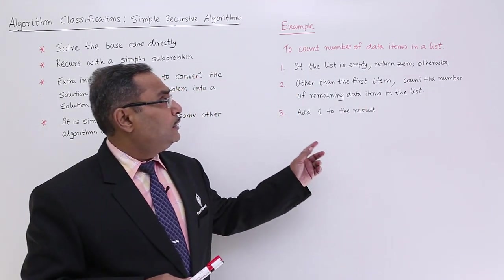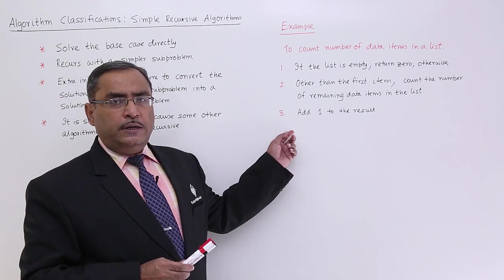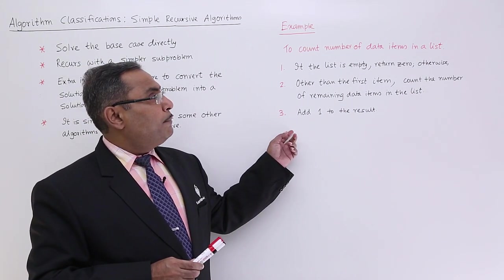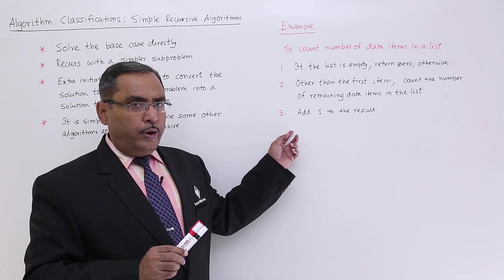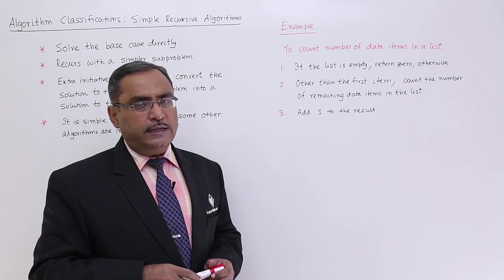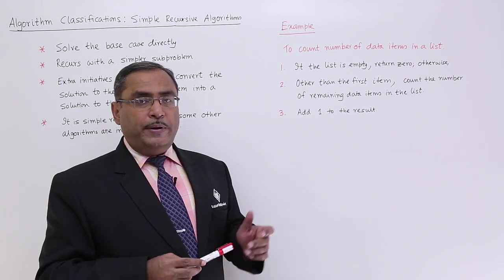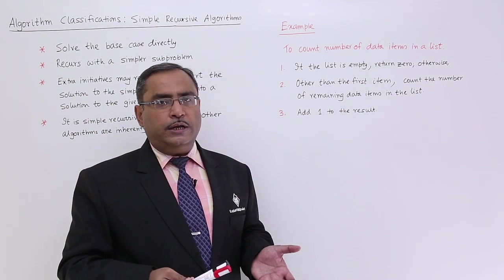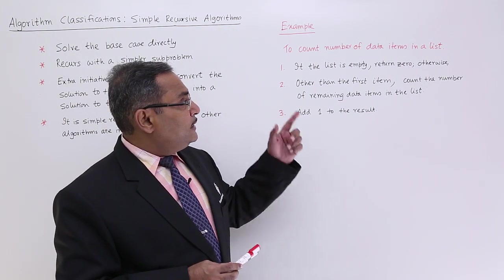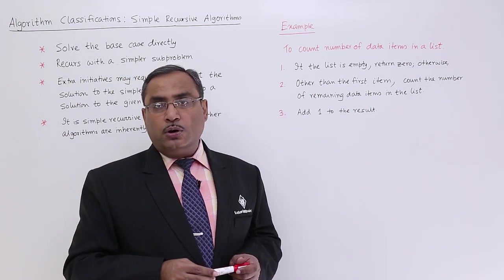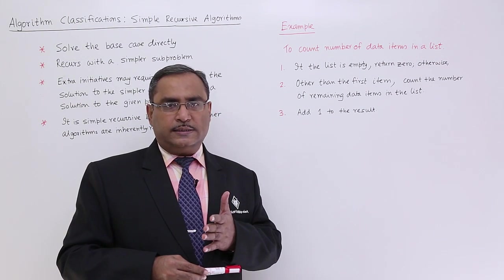As an example, let us suppose we've been asked to count the number of data items in a list. So we are going to count the number of data items in the data list. Now the base case will be if the list is empty, then count will be zero and zero will be returned. So if the list is empty, return zero; otherwise, we go for the recursive call.